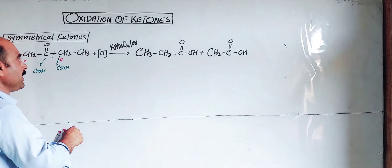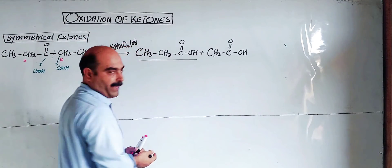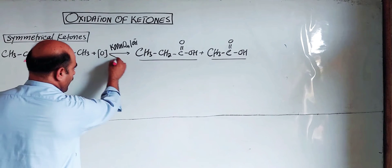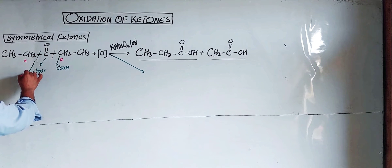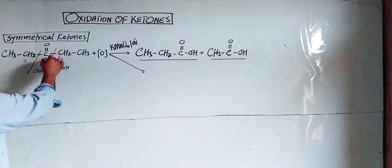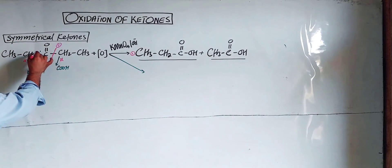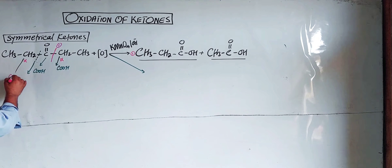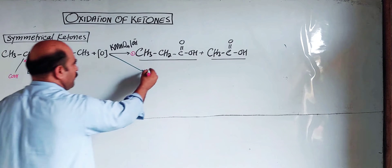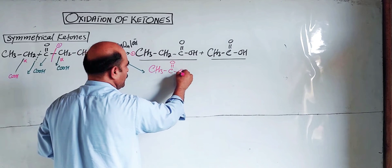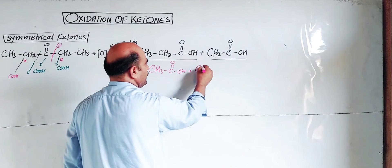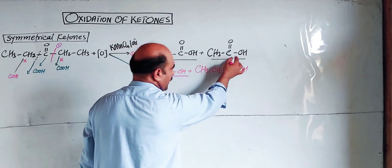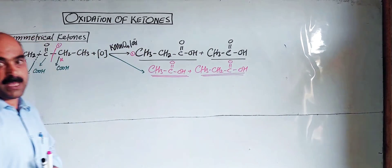So, from the symmetrical ketone, on both sides the bond breaks the same way. From the left side: CH3CH2COOH. From the right side: CH3COOH. Since the ketone is symmetrical, both possible bond breaks give the same products — CH3COOH plus CH3CH2COOH. The products are ethanoic acid and propanoic acid. This is the characteristic of symmetrical ketones.